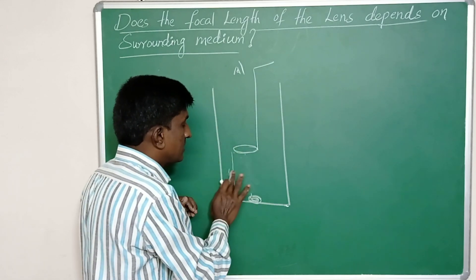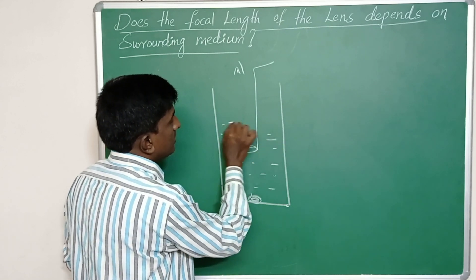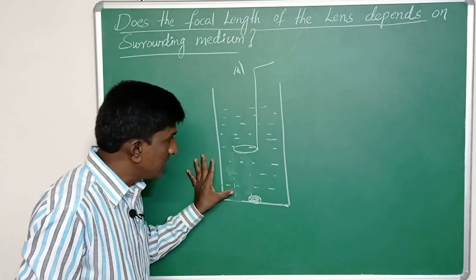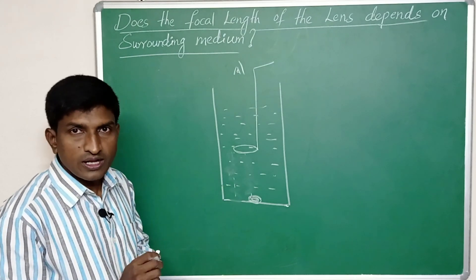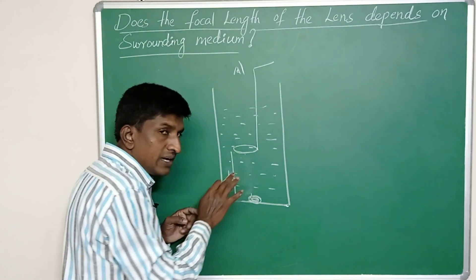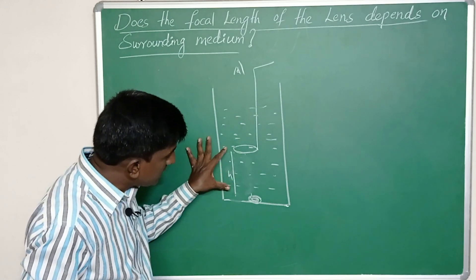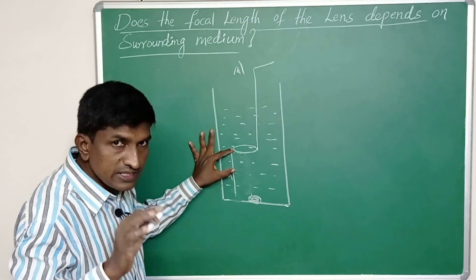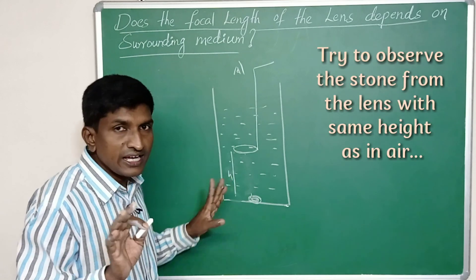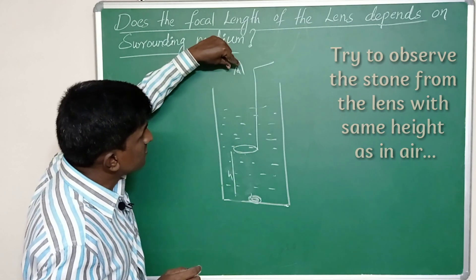Now remove the lens and fill the vessel with water, without disturbing the stone. We are maintaining the same distance — the same height at which we observed the stone in air — but now the surrounding medium is water.